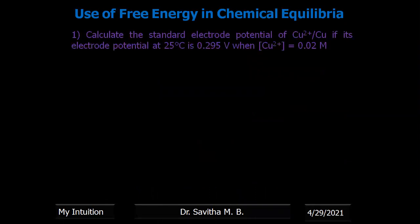Now I am mainly discussing the problems — problems with E-cell determination, that is electrode potential of a cell and single electrode potential. In our previous class we derived the Nernst equation for a single electrode and discussed cell potential. The first question: calculate the standard electrode potential of copper if its electrode potential at 25°C is 0.295 V when copper concentration is 0.02 molar.